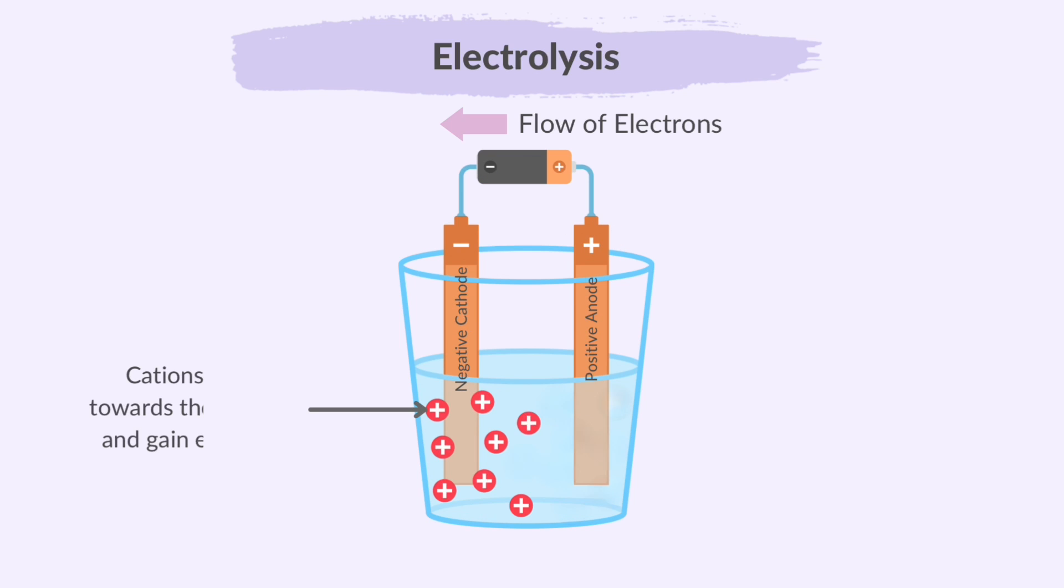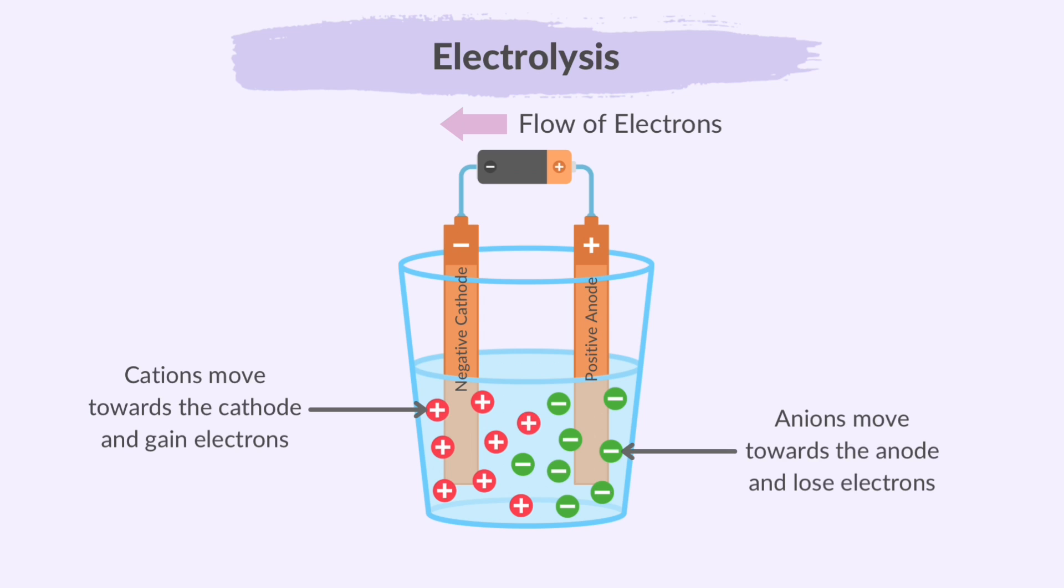The positive cations in the electrolyte move towards the cathode where they gain electrons. The negative anions in the electrolyte move towards the anode where they lose electrons. The electrons from the anode move back towards the power supply.